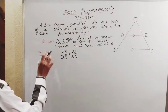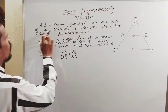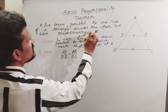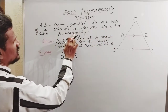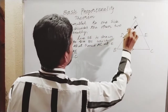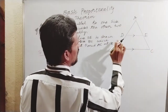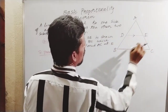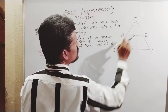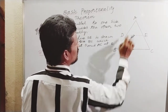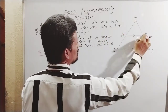What is the statement? A line drawn parallel to one side of a triangle divides the other two sides proportionally. See here, in this figure, in triangle ABC, a line DE is drawn parallel to BC, then it divides the other two sides in the same ratio. That is, AD/DB is equal to AE/EC.